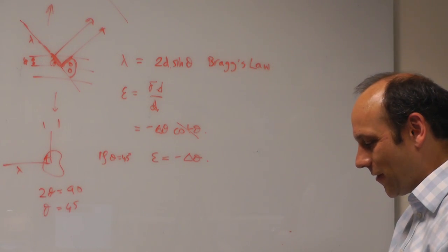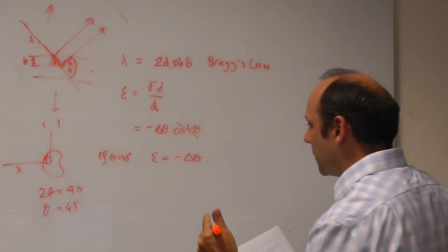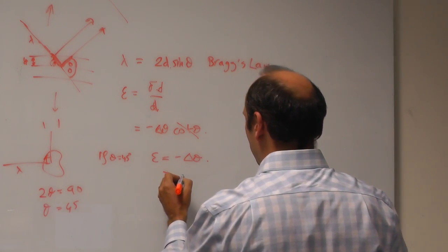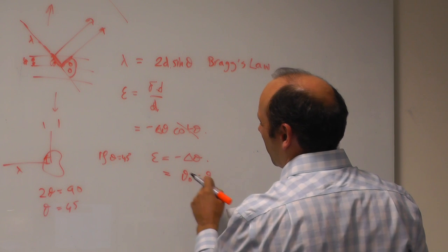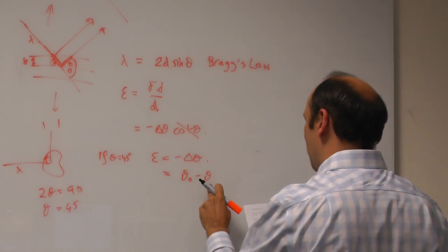And therefore, it's a very simple equation. So we can say that the strain is equal to theta 0 minus theta. It will be theta minus theta 0, but there's the minus sign, so it's theta 0 minus theta.